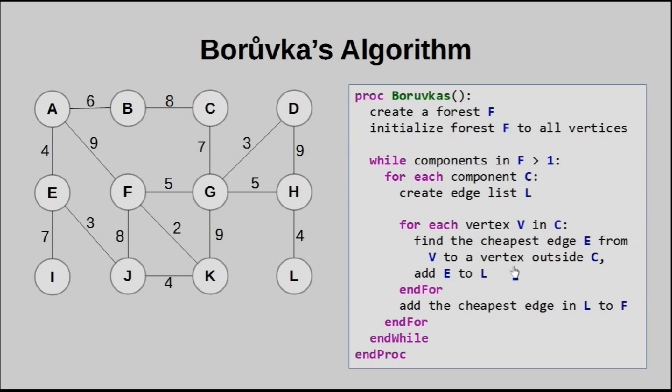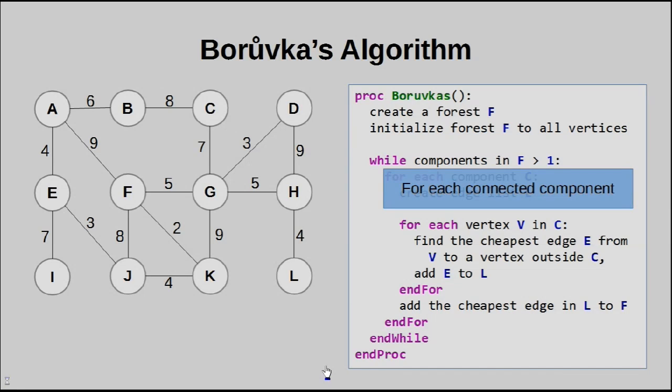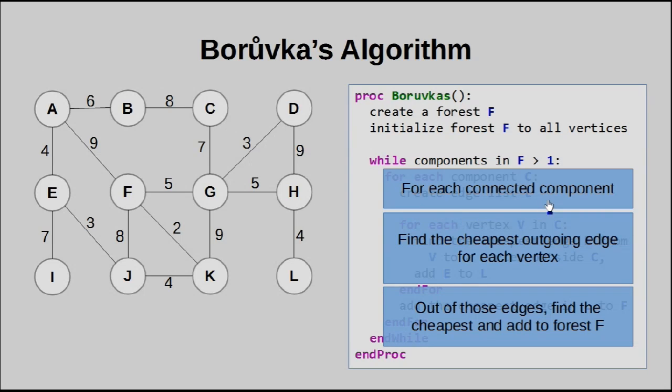For each disconnected component, what we're going to do is we're going to start off with an empty list, then we're going to look at every vertex within that one component. And for each vertex, we're going to look for the cheapest outgoing edge. When I say outgoing, what I mean is we want to look for an edge that connects that particular node to a node outside of the current component. So yeah, we want to find the cheapest one of these edges and add them to this edge list. So what we get by the time we end up at this line is a list of edges. These edges are the edges outgoing from the current component, and they are the cheapest one for each vertex. Out of all these edges, which are held in list L, we then have to find the cheapest edge in that list.